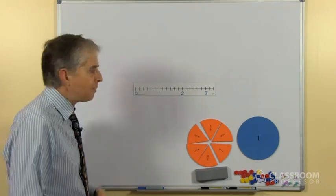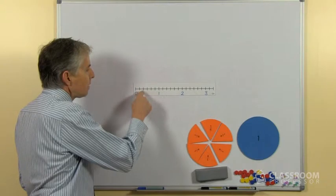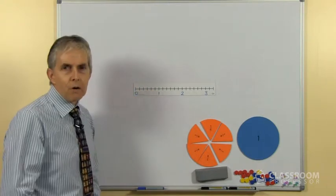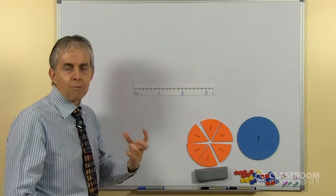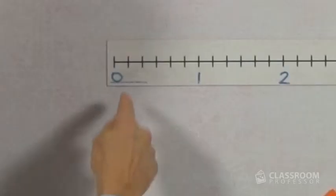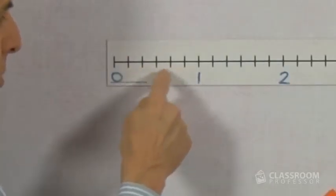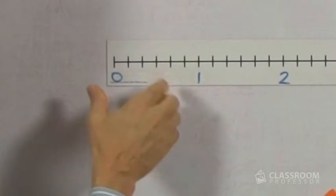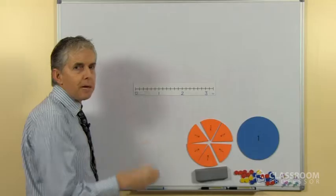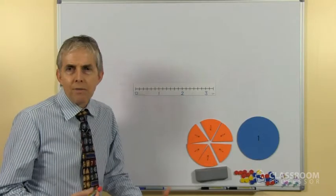Notice, of course, and this is obvious to an adult, if you simply count the lines you'll get the wrong answer if you say that's the number of pieces. There are 5 vertical strokes between the 0 and the 1, but there are 6 even spaces.